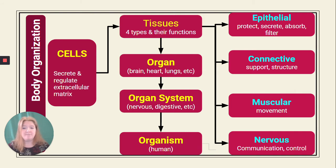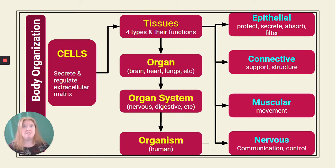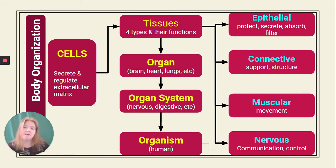Now let's break the tissue group down further. We're going to learn about four tissue groups today: epithelial, connective, muscular, and nervous. Epithelial covers all the surfaces and it protects, secretes, absorbs, and filters. Connective provides support and structure — it does so much more. Muscular focuses on movement, and nervous tissue focuses on communication and control.